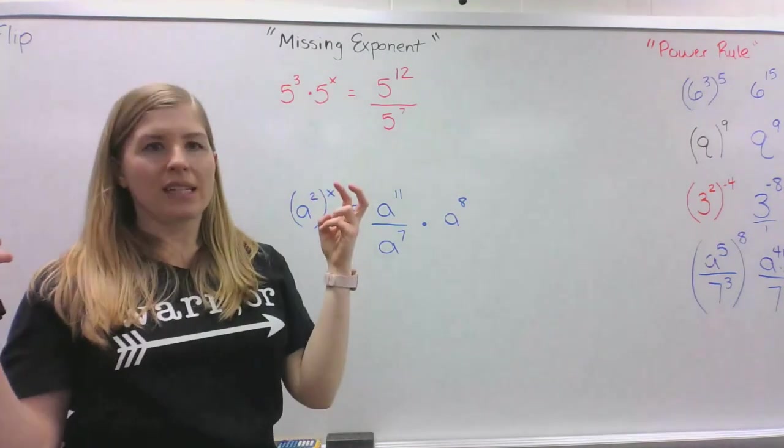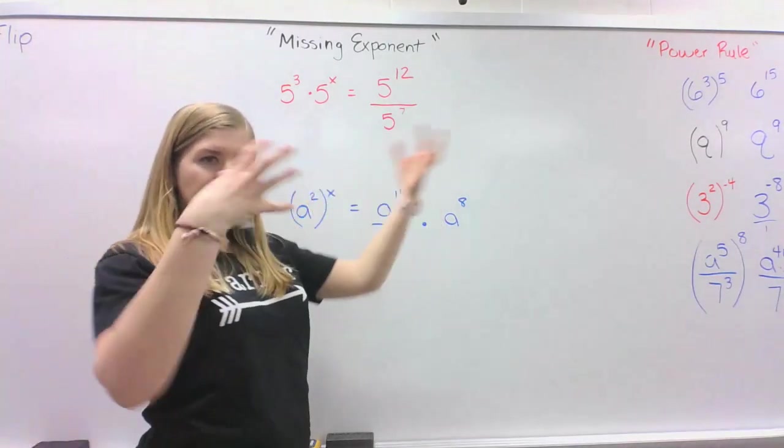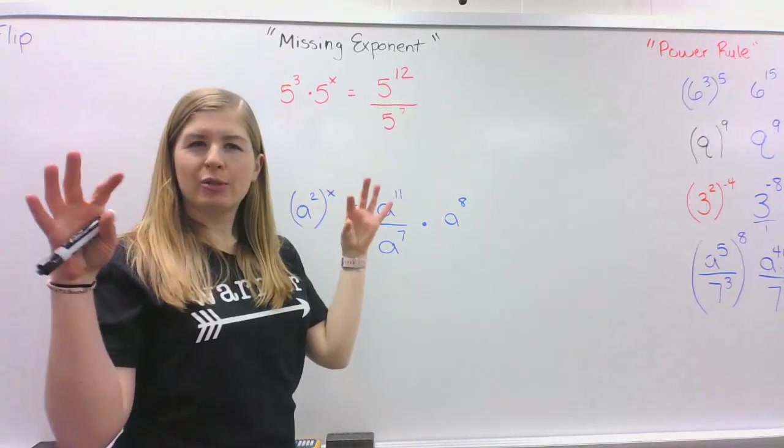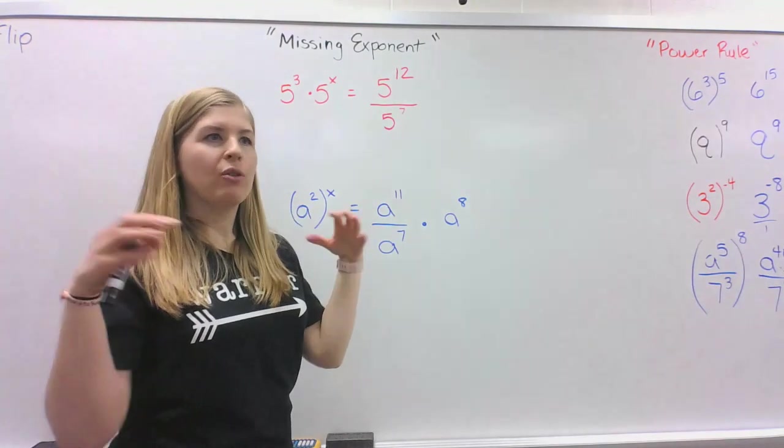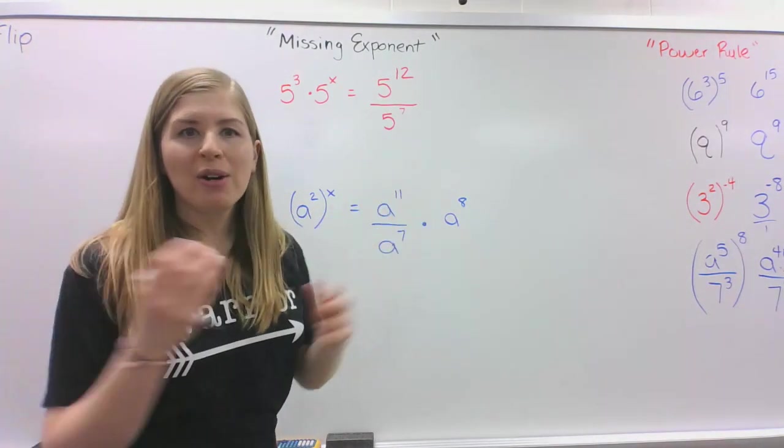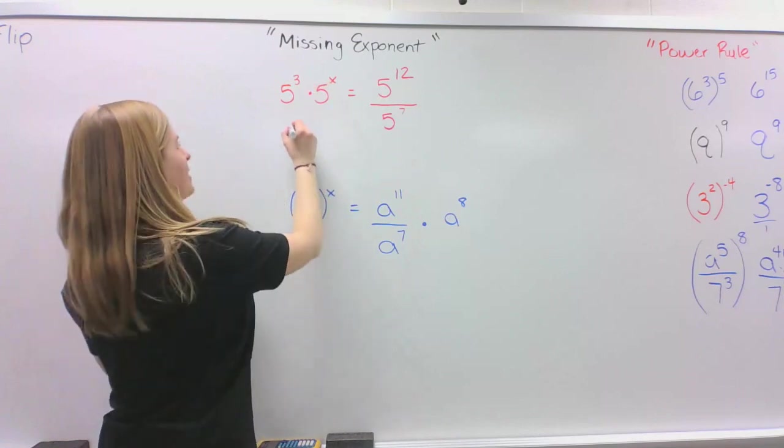Since we're trying to find the missing exponent, we're actually going to take all those exponents and write them as an expression or multi-step equation. So we have 3 plus x, because we don't know what x is yet.